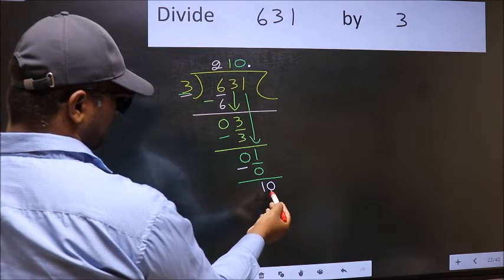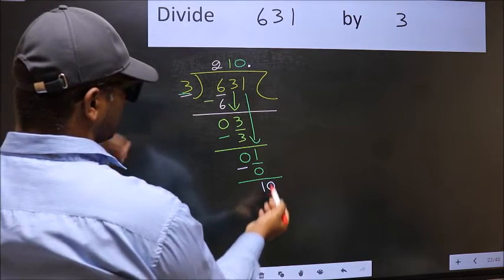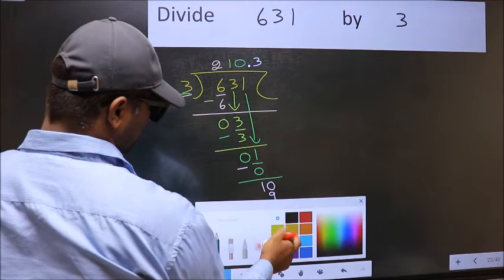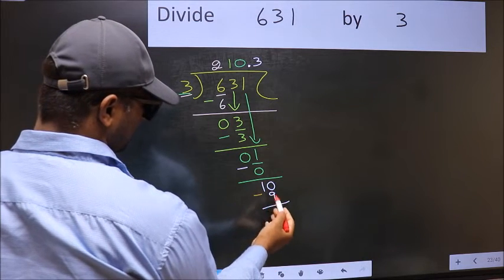So 10. A number close to 10 in 3 table is 3 threes, 9. Now you should subtract. 10 minus 9, 1.